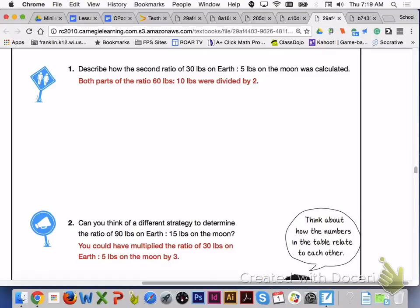For number 1, both parts of the ratio 60 pounds to 10 pounds were divided by 2 in order to get 30 pounds to 5 pounds. So your scaling down factor was 2.